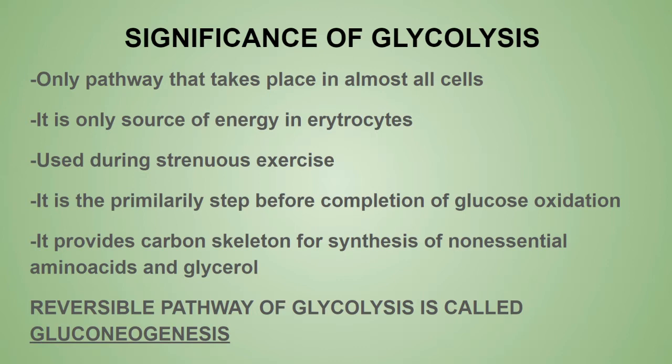Glycolysis is the primary step before complete oxidation of glucose. If this pathway runs in reverse — forming glucose instead of breaking it down — that is known as gluconeogenesis. So: glycolysis is the breakdown of glucose, while gluconeogenesis is the formation or synthesis of glucose.